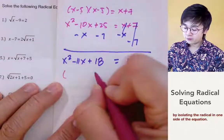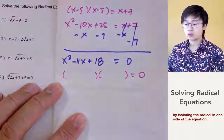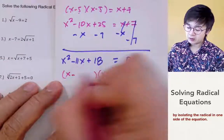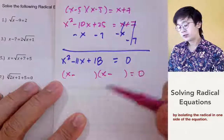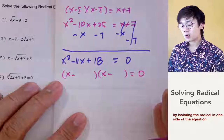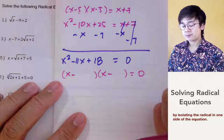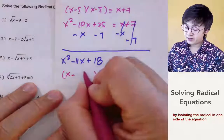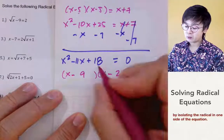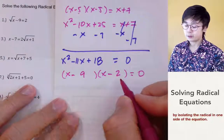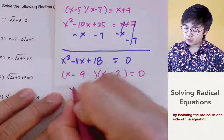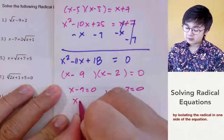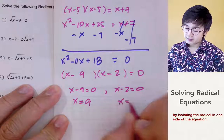Let's see if we can factor this; otherwise we'd use the quadratic formula. The factors of 18 that add to negative 11 are negative 9 and negative 2, since negative 9 times negative 2 is positive 18 and negative 9 plus negative 2 is negative 11. By the zero product property, x minus 9 equals 0 and x minus 2 equals 0, giving x equal to 9 and x equal to 2. We need to verify both.